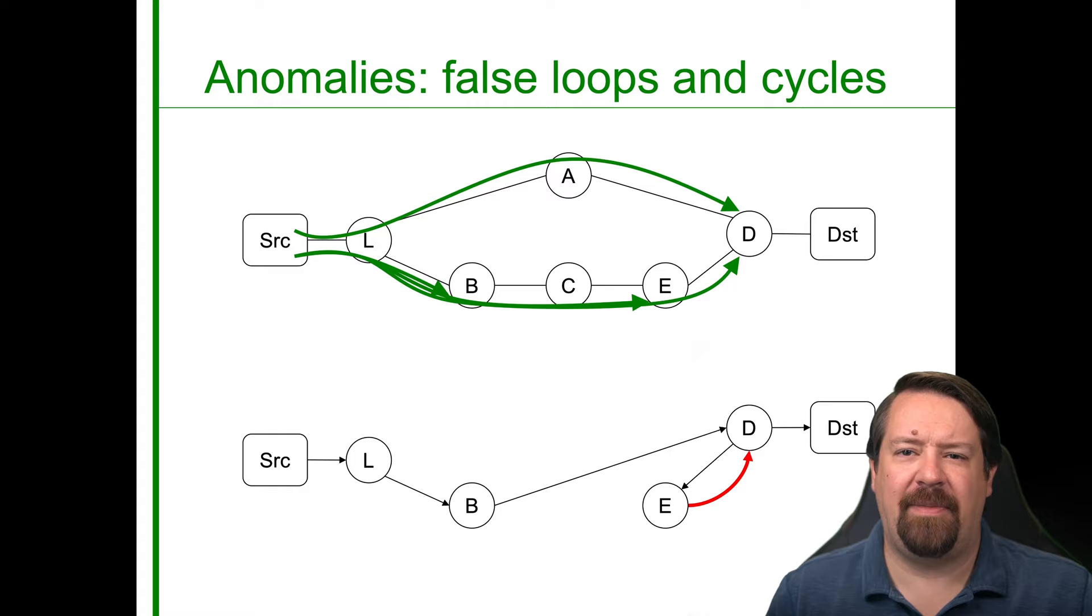So while in some cases there can be real routing loops in the internet, typically temporary, trace routing over such a topology would make it look like there was a routing loop happening all the time when in fact there is no routing loop.